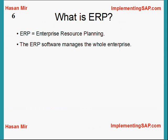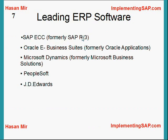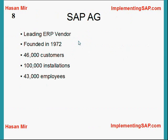Let's talk about the ERP market. SAP is the leader in the ERP market. The latest version of SAP is called SAP ECC — ERP Central Computing. Formerly SAP used to be known as SAP R3, which was the previous version. The second largest player is Oracle E-Business Suite, formerly known as Oracle Applications. Microsoft also produces their ERP called Dynamics, formerly known as Business Solutions. PeopleSoft and JD Edwards were also big players — PeopleSoft was purchased by Oracle, and JD Edwards was purchased by PeopleSoft, so both are now part of Oracle Corporation.